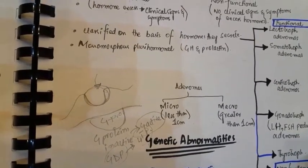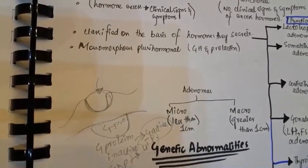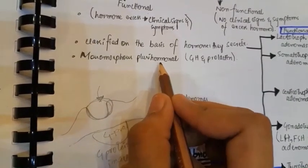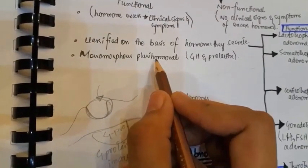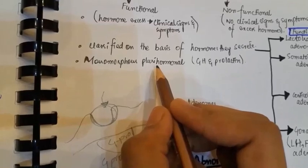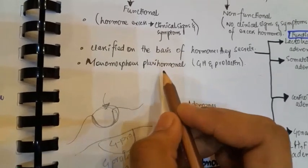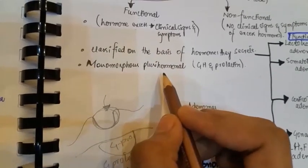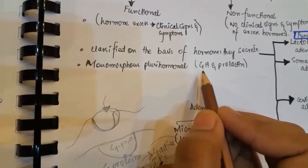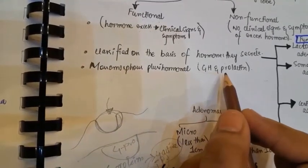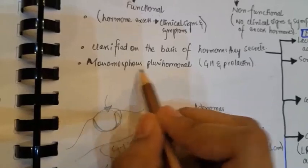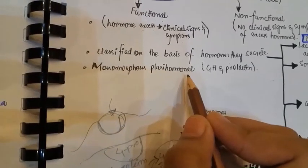What are monomorphous plurihormonal adenomas? When pituitary adenomas consist of a distinctive type of cell that produces two hormones — like growth hormone and prolactin from one cell — they are known as monomorphous plurihormonal adenomas.